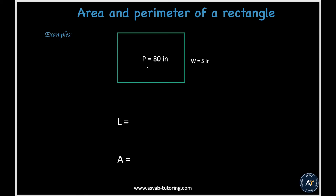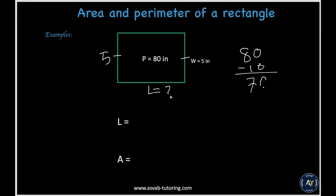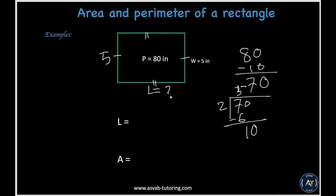In the next problem, a rectangle is given with the perimeter and one side known, and you need to find the missing side L. Since opposite sides are the same, if one side is 5 then the opposite is also 5. So 5 plus 5 is 10. Subtracting from 80 gives 70. Dividing 70 by 2 gives the missing side, which is 35.